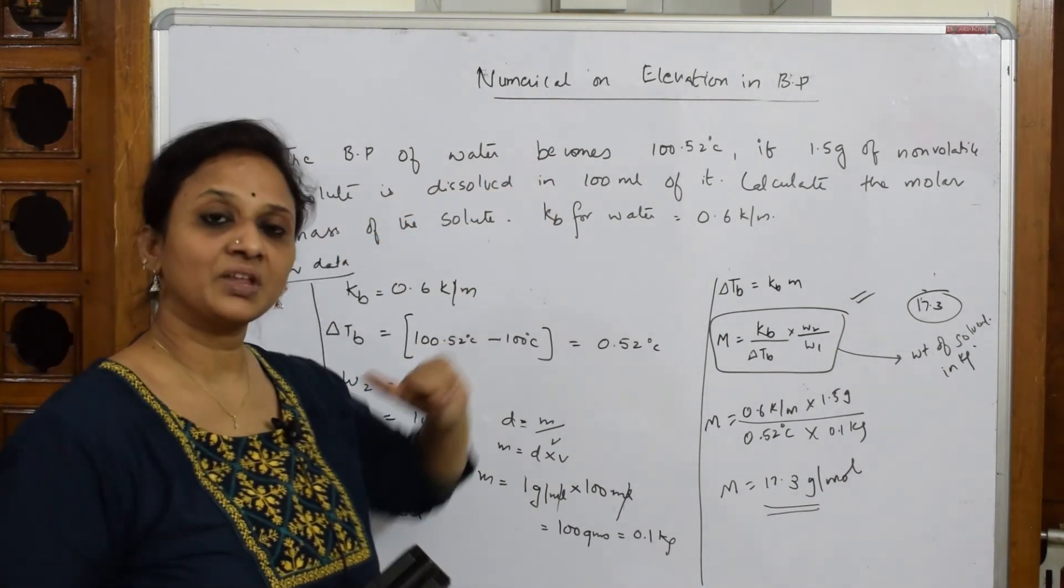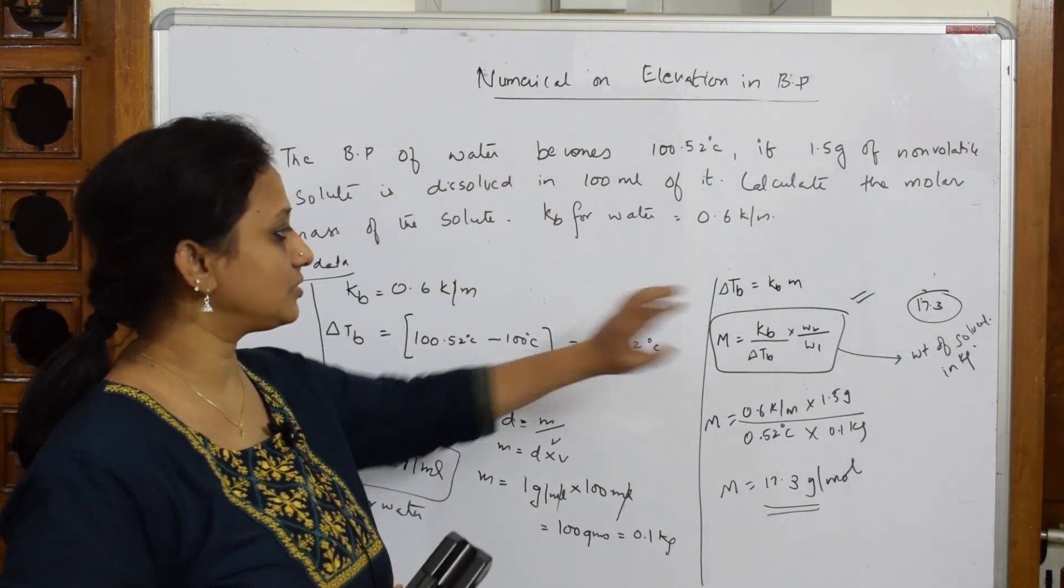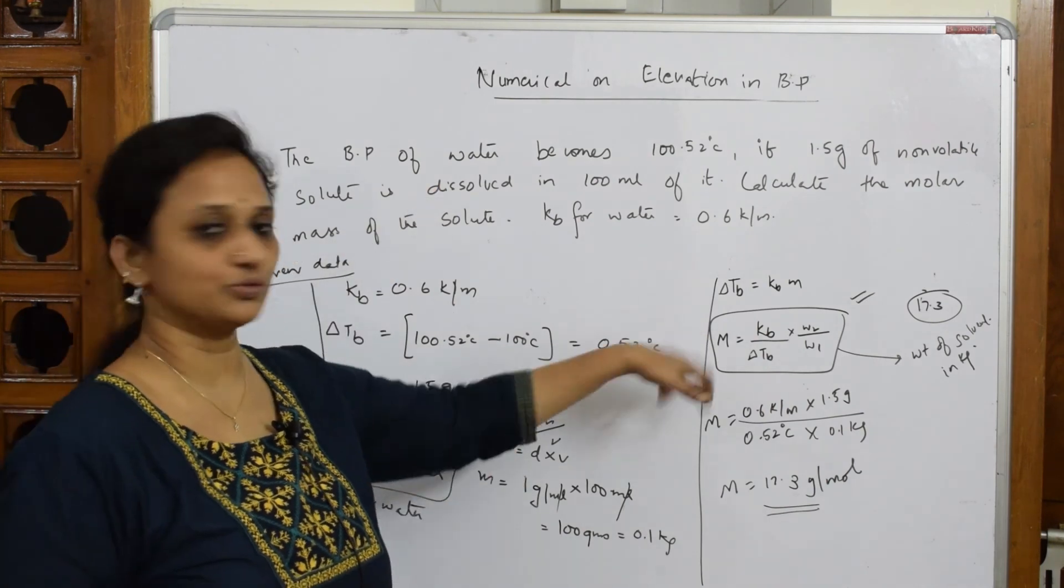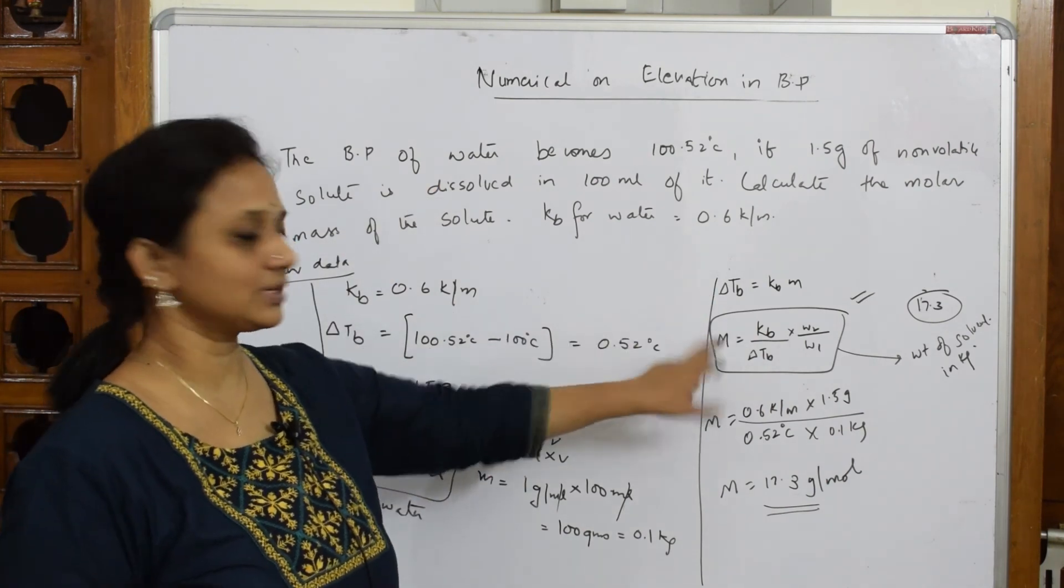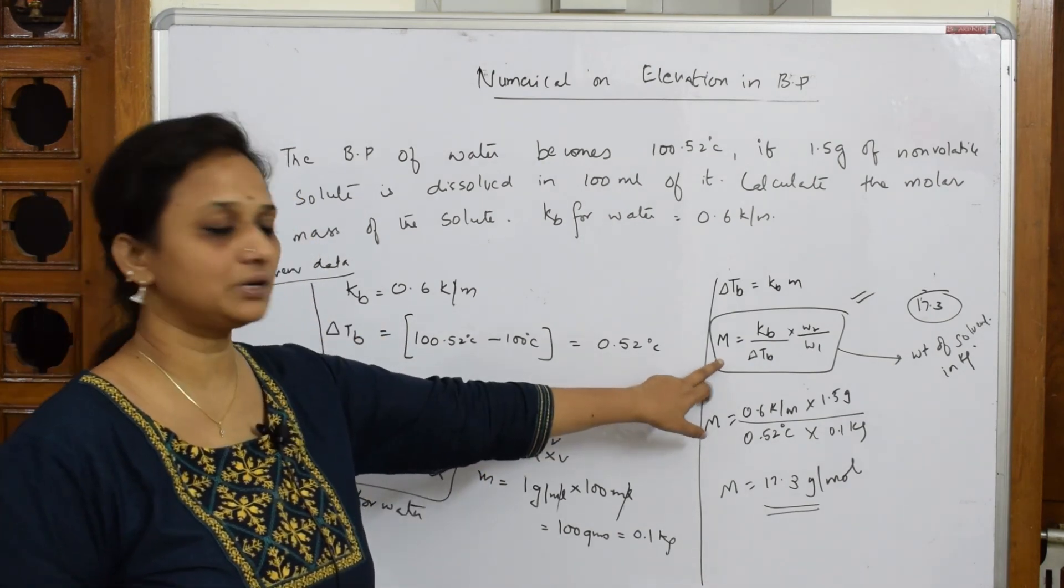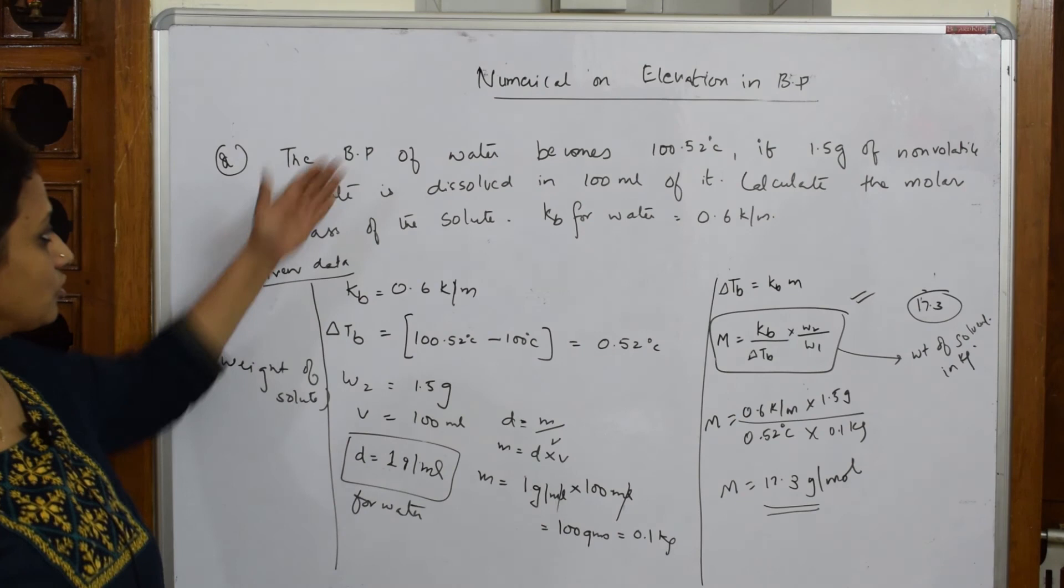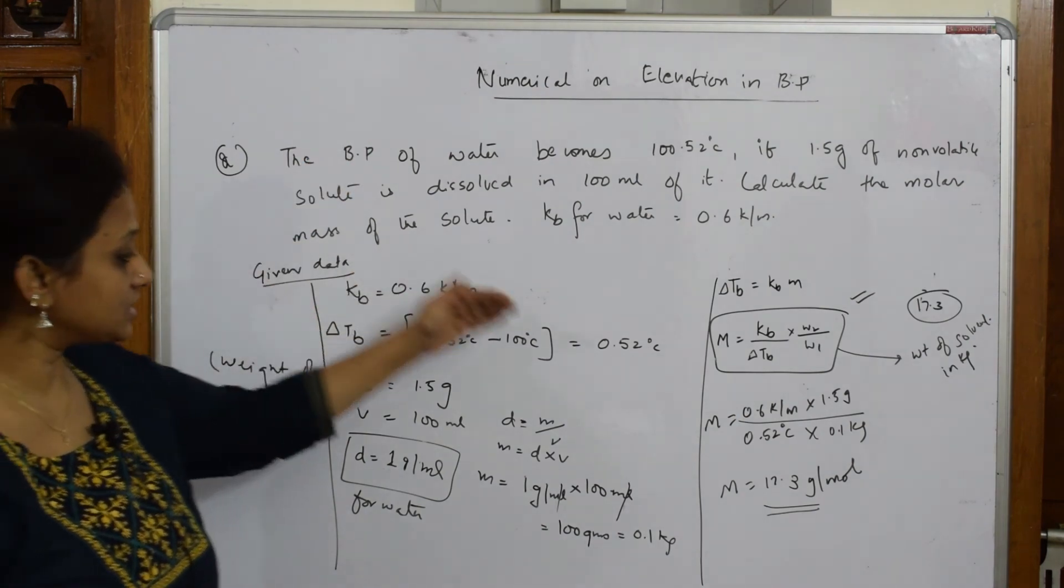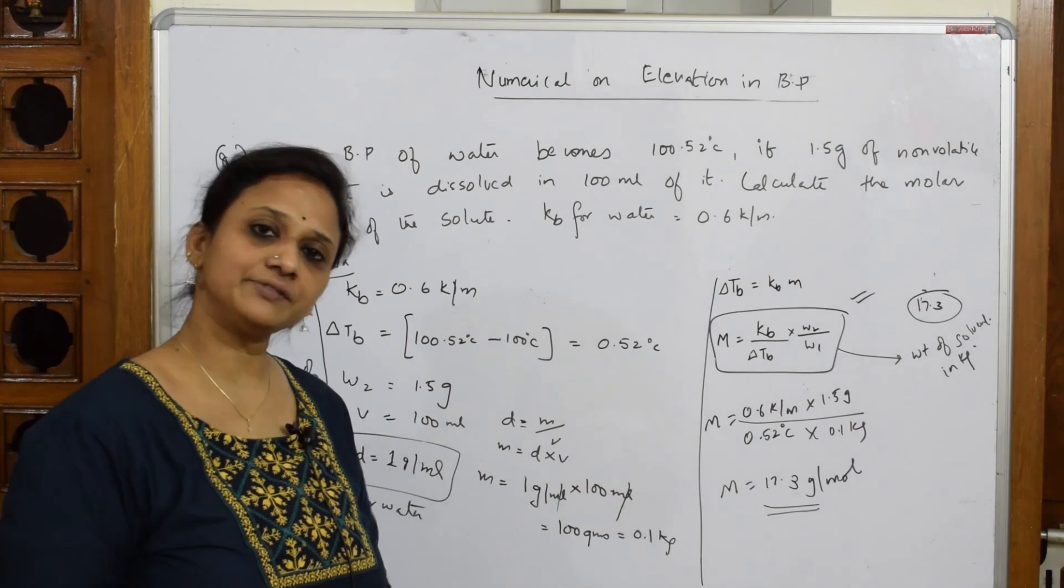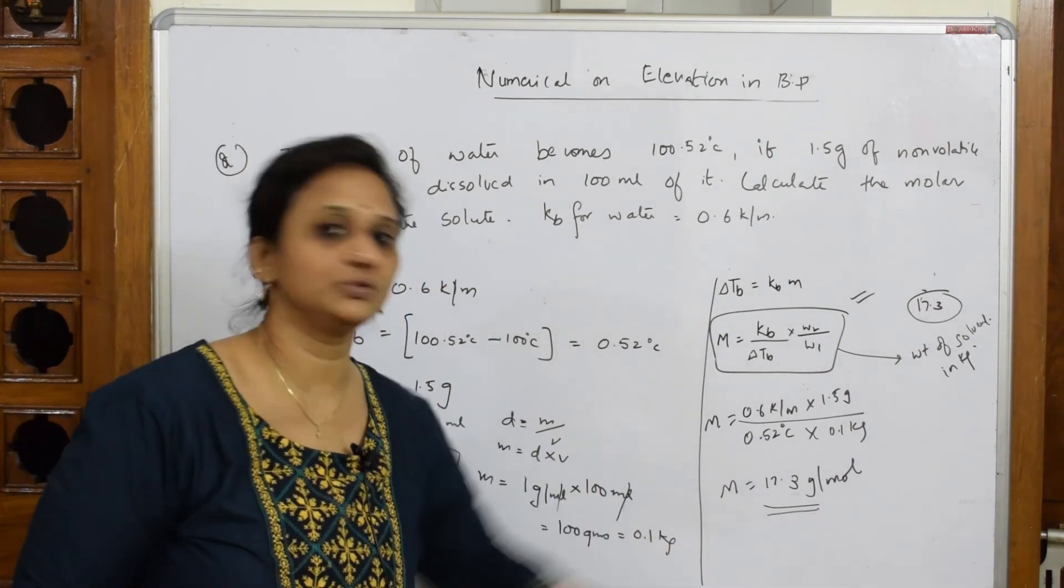As soon as the numerical is given to you, write the formula. Because you can see, boiling point formulas are only 2. Mostly they will be asking you molecular mass. After writing the formula, write the given data, copy it from the sum. And see whichever units you have to convert, you have converted. Directly substitute and find the answer. Important: write the units also.